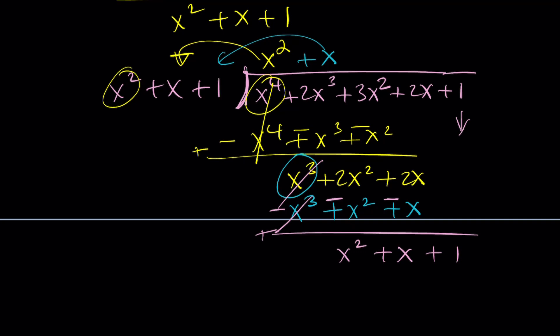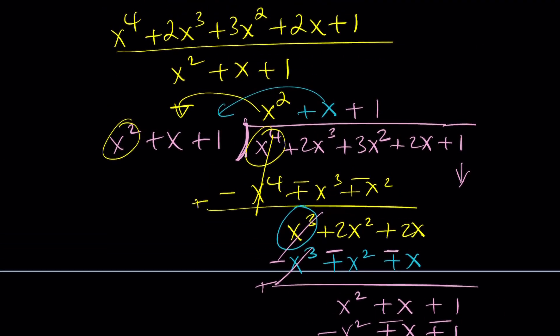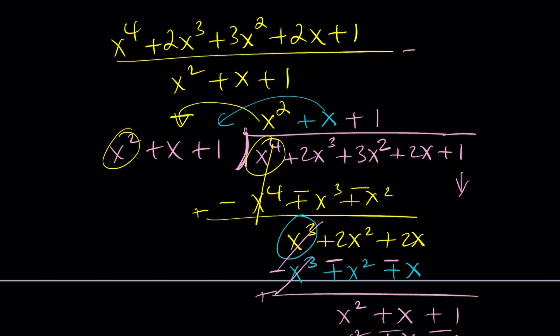And you're going to get this. And notice, x squared plus x plus 1 goes into itself one time. And that's going to give you the exact same thing. Therefore, when you subtract, you're going to get a remainder of 0. You're adding the opposite, which is equivalent to subtraction. So the remainder is 0, which is good. And the quotient is the answer, which is x squared plus x plus 1. It's the same as the denominator. Is that a surprise? It shouldn't be.